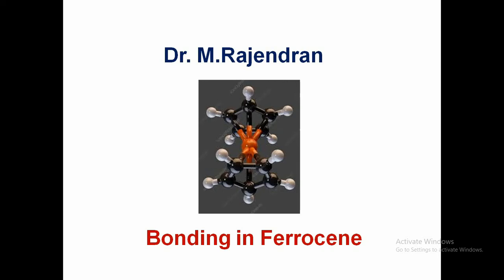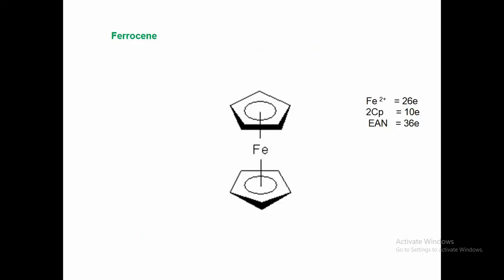Today we are going to discuss the bonding in ferrocene. The ferrocene molecule is a sandwiched structure of a center ion. It obeys the EAN rule, i.e., total valence electrons satisfy the nearest noble gas configuration.